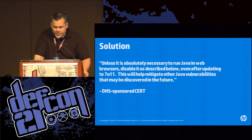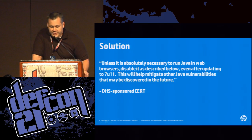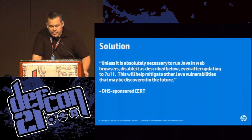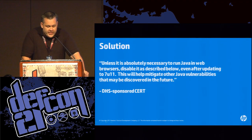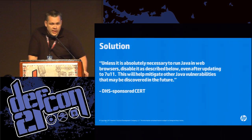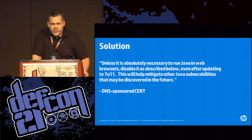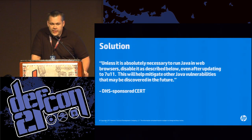The first thing we're going to do is start with the solution actually provided to us by the U.S. government: 'Unless it's absolutely necessary to run Java in a web browser, disable it as described below, even after updating to 7U11, this will help mitigate other Java vulnerabilities that may be discovered in the future.' This came from an advisory on the day they released U11. So the U.S. government is telling you that you should not use the latest version of a software.